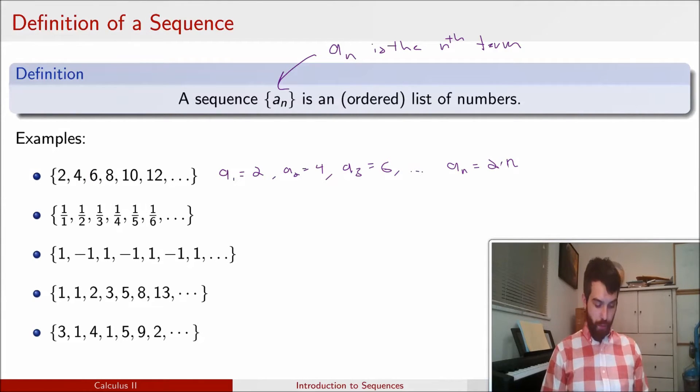We can go down the list for the next sequence, 1, 1 half, 1 third, 1 quarter. I'm going to use b now because a is already being used up, but in this case, b_n is just equal to 1 over n. So for example, the third term b_n is just 1 third.